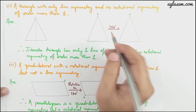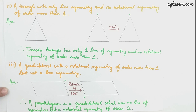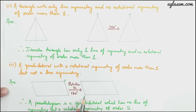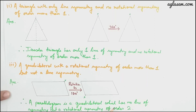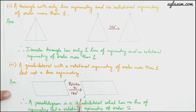The third part asks for a quadrilateral with rotational symmetry of order more than one but no line symmetry. The answer is a parallelogram — it is a quadrilateral which has no line of symmetry but has rotational symmetry of order more than one. If you rotate it 180 degrees, this side will come over here.